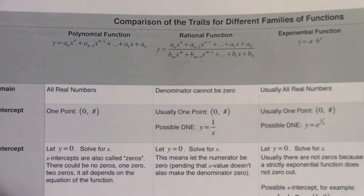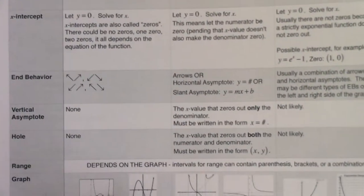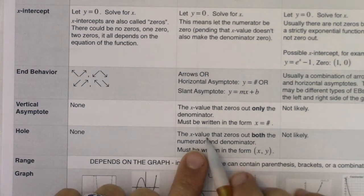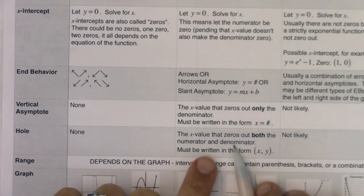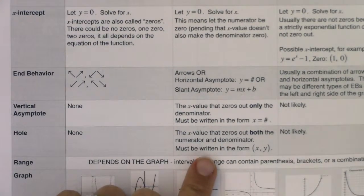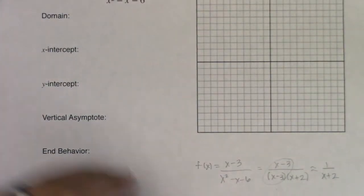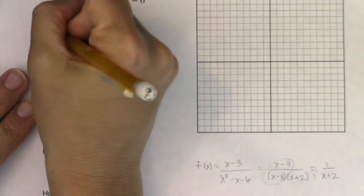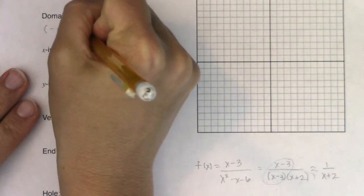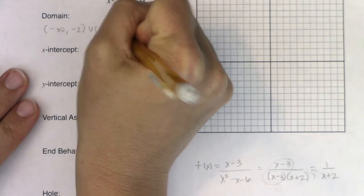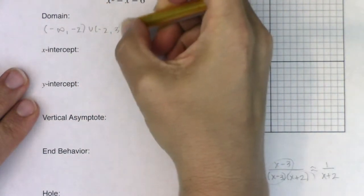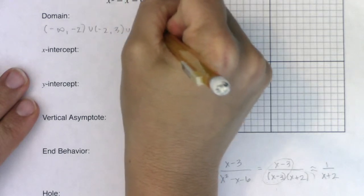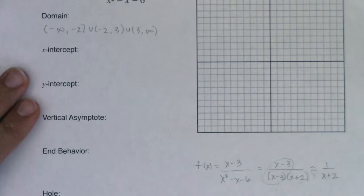When we go back to the trait table for rational functions, if you look at the holes category it says: is there an x value that zeroes out both the numerator and denominator? This is the first time we're encountering that. My denominator zeroes out at two places: it zeroes out at 3 and at negative 2. So I'll go ahead and take those out of my domain.